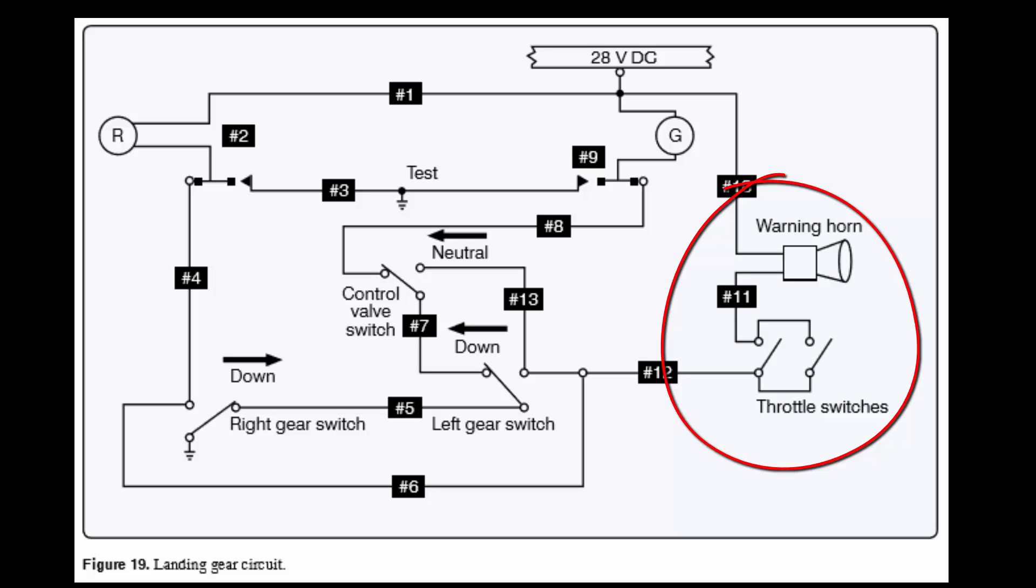This is an important part of the schematic. If either one of these throttle switches is closed, current can go through the circuit from wire 11 through the switches to wire 12. Either one or both doesn't matter.